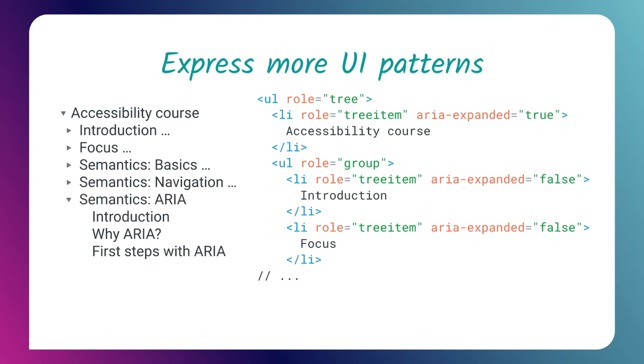ARIA can also express semantics and UI patterns that don't already exist in HTML — this is where ARIA really comes into its own. For example, a tree widget component: you can take an unordered list, add ARIA roles of tree, tree item, and group, and add an aria-expanded attribute to some children. Now you're expressing the richer semantics of a tree element. There's no tree tag in native HTML, so this is something you wouldn't be able to build accessibly without ARIA.